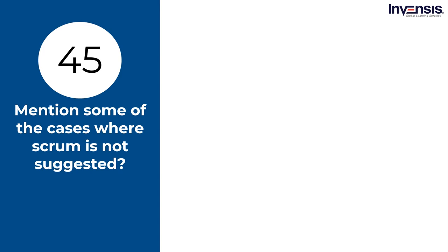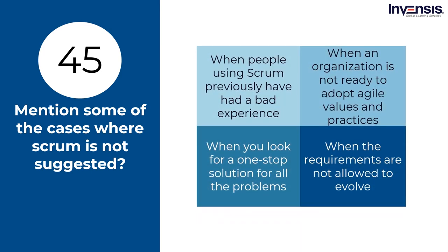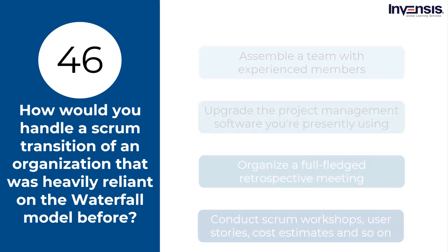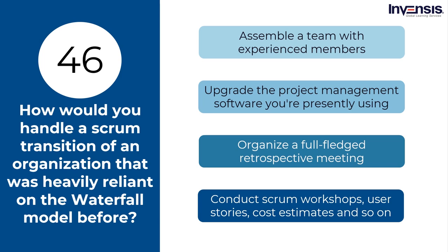Mention some cases where Scrum is not suggested. Certain situations where using Scrum is not suggested include when people using Scrum previously have had a bad experience, when an organization is not ready to adopt Agile values and practices, when you look for a one-stop solution for all problems, and when requirements are not allowed to evolve. How would you handle a Scrum transition of an organization that was heavily reliant on the waterfall model? Some ways include assembling a team with experienced members, upgrading project management software to suit the Agile environment, organizing a full-fledged retrospective meeting, and conducting Scrum workshops, user stories, cost estimates, and so on.